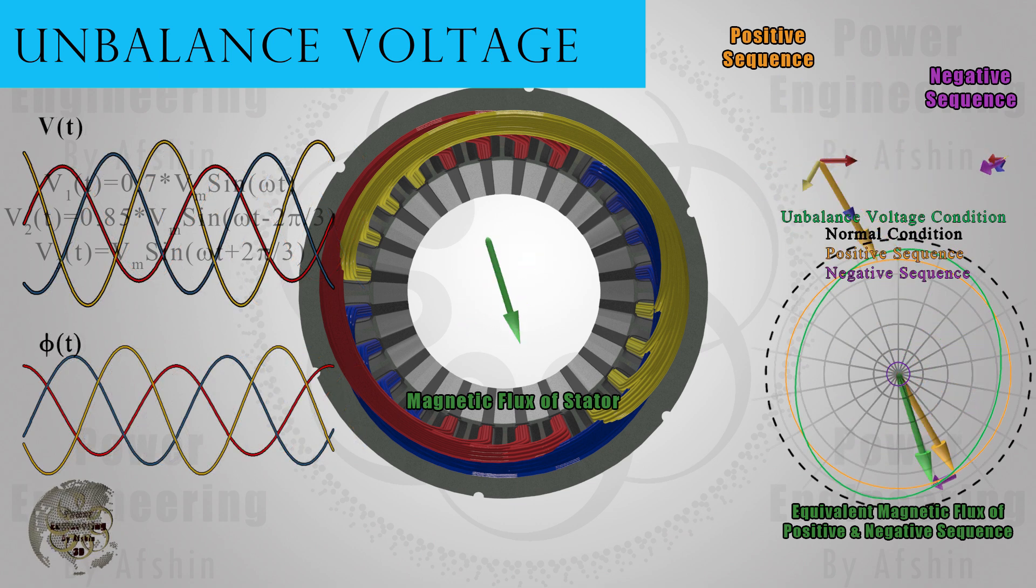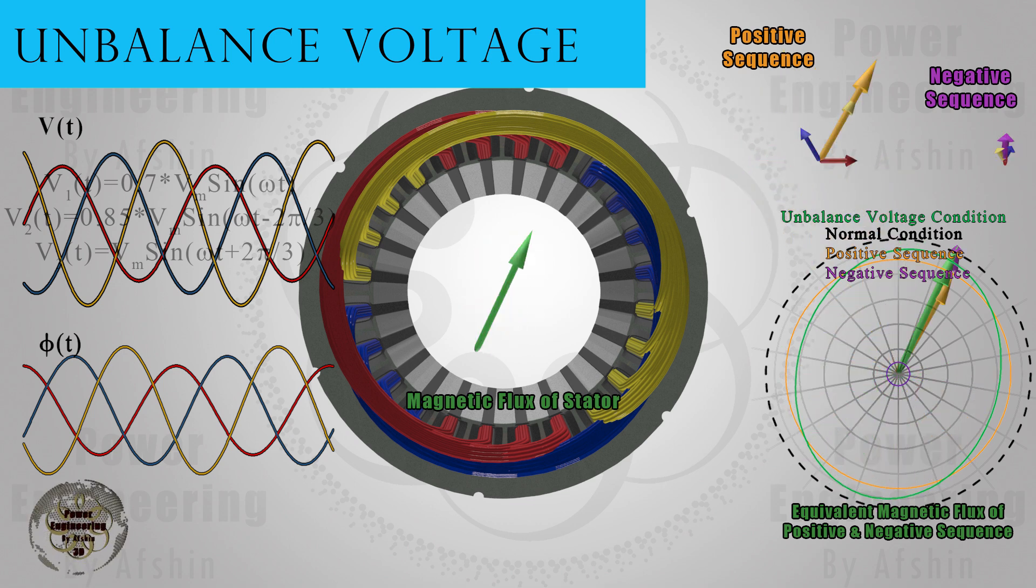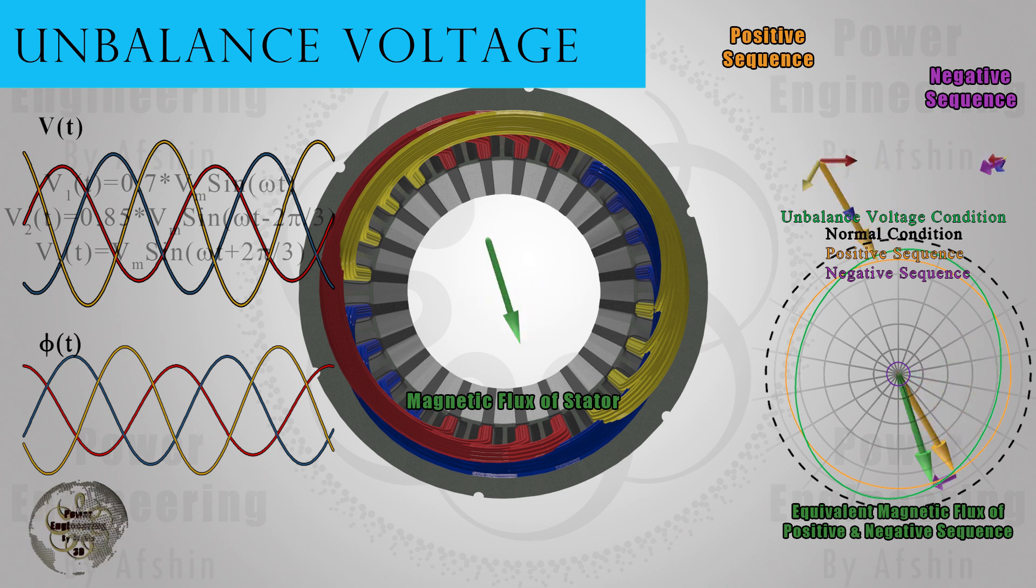In these conditions, the rotating field has both positive and negative sequences. However, there is also zero sequence. But since the zero sequence does not contribute to the creation of the rotating field, we disregard it. The presence of the zero sequence leads to heat generation, losses, and saturation.